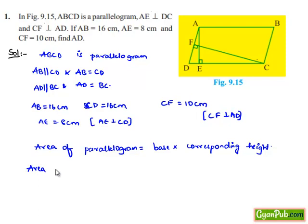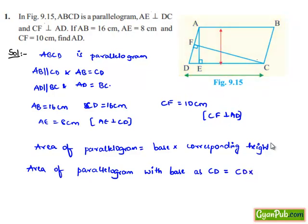Therefore, area of parallelogram with base as CD will be equal to base times corresponding height. Here, the base is CD and corresponding height to CD is AE, which is equal to 16 cm times 8 cm, that is equal to 128 cm square.